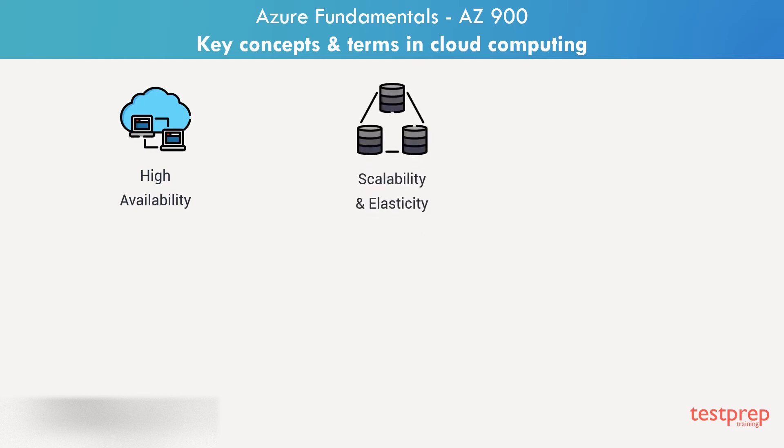Scalability and elasticity. We spoke about scalability and elasticity in the previous video. Adding capabilities to manage an increase in demand to an existing resource is called scaling out or scaling up. A distinction between scalability and elasticity is that elasticity is done automatically.